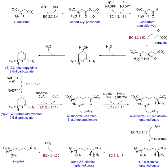Translation occurs in three phases: initiation, elongation, and termination. The completion of the initiation phase is dependent on three events: 1. The recruitment of the ribosome to mRNA. 2. The binding of a charged initiator tRNA into the P site of the ribosome. 3. The proper alignment of the ribosome with mRNA's start codon.